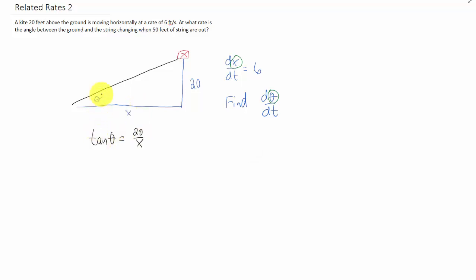We can say that the tangent of this angle is opposite over adjacent, or 20 over x. Or maybe slightly more conveniently, because we're going to be taking a derivative of this, we can say that the cotangent of our angle is x over 20.